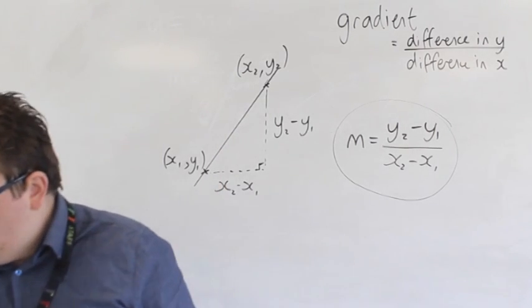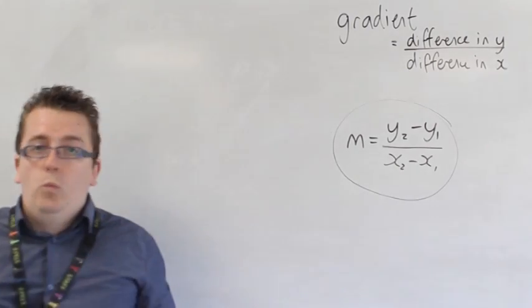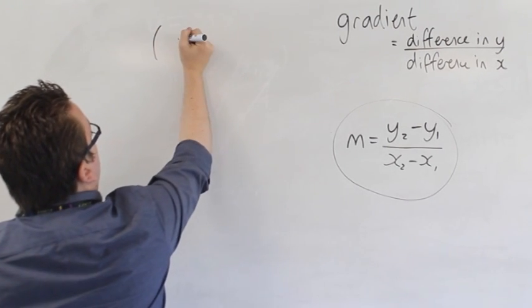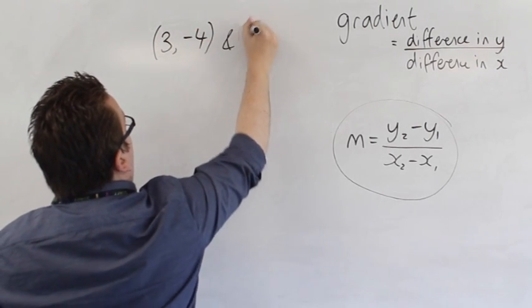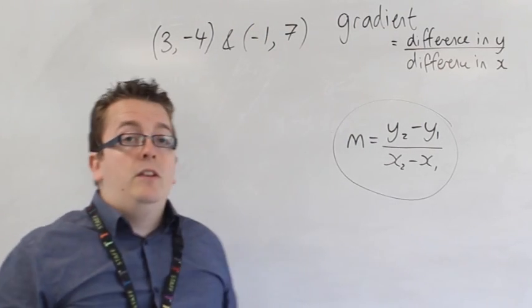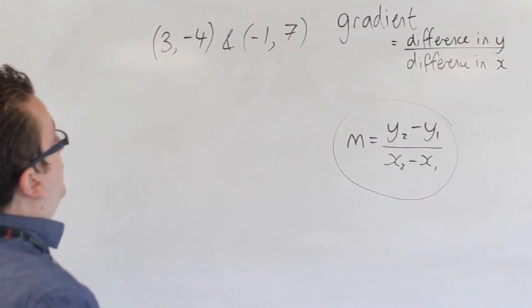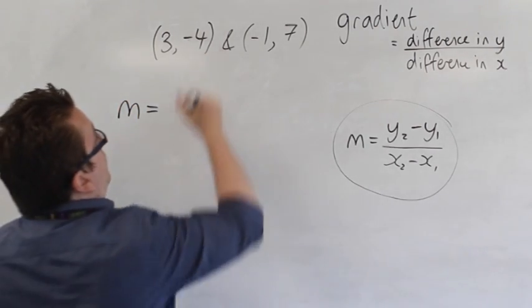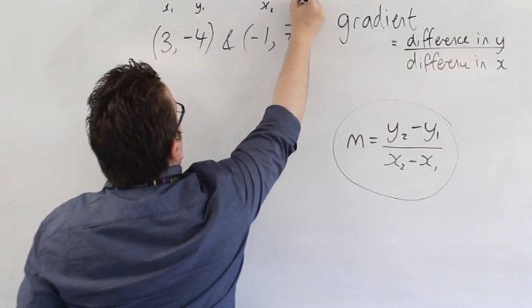So it gets to the point where you're not going to necessarily have a diagram with the line - you might just be given two coordinates. So let's say (3, -4) and (-1, 7). And say we need to define the gradient between these two points. So let's call this one X1 and that's Y1, and this is X2, Y2.